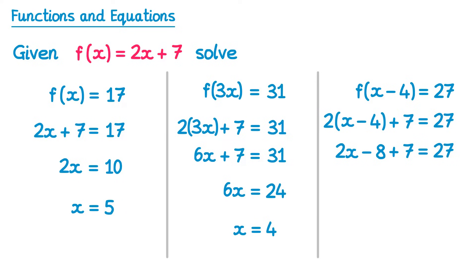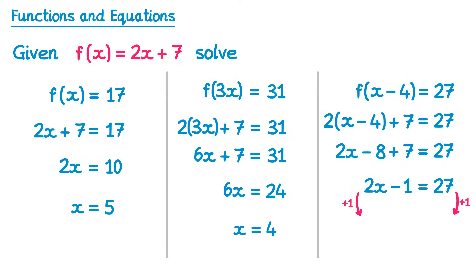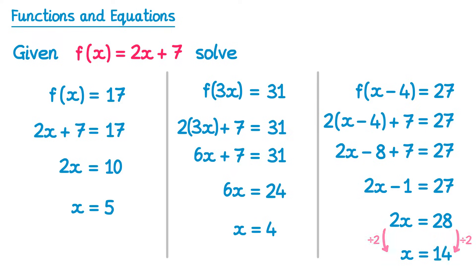The negative 8 plus 7 simplifies to negative 1, so we have 2x − 1 = 27. Adding 1 to both sides gives 2x = 28, then dividing both sides by 2 leaves x = 14.